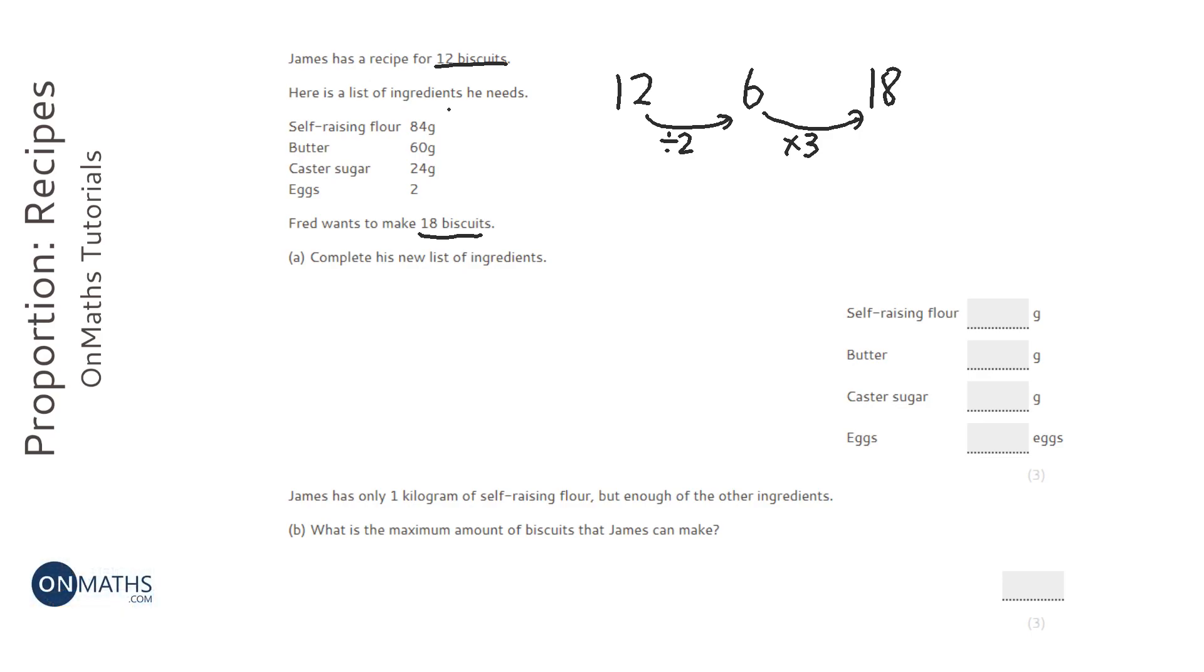So what I'm going to do with each of these ingredients is I'm going to halve them to find out what the amounts for six biscuits are, and then I'm going to times them by three to find out the amounts for 18. So half of 84 would be 42, half of 60 would be 30, half of 24 would be 12, half of 2 would be 1. And now because we've got 12 biscuits here and we've halved them to make 6.